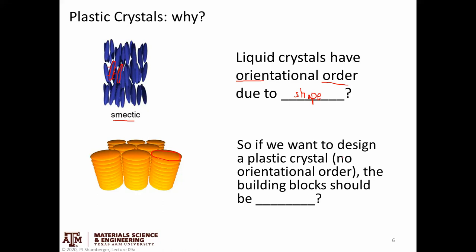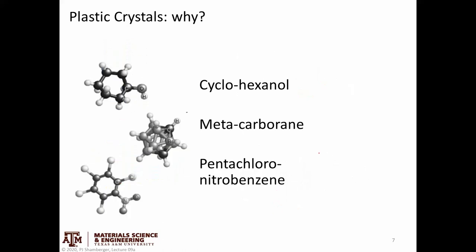If we want to design the ideal plastic crystal — the molecule that would be able to spin freely in different directions — then what should those basic building blocks be? Well, they should be a sphere: a shape that is not going to restrict it at all in terms of what direction it's pointing. So if we want to design a plastic crystal, the building blocks ideally should be spherical. These are some examples of molecules that tend to form plastic crystals. It's a little hard to see from a 2D representation, but a lot of them have roughly spherical symmetry, particularly things that are basically icosahedrons with some functional groups off the side.